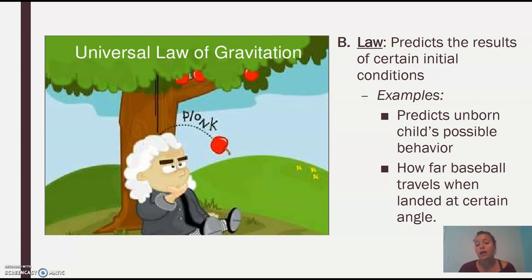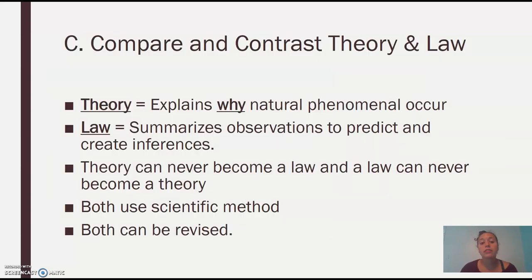So again, it'd be like the child's behavior. The theory would be because of genes or nature versus law, you know, nature versus nurture. So comparing the two, the theory always explains why natural phenomena occur. The law actually summarizes observations to predict and create an inference.